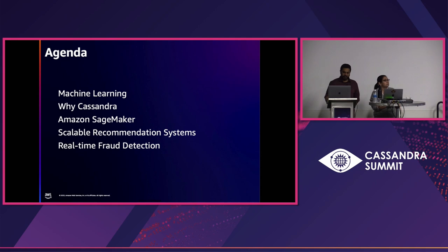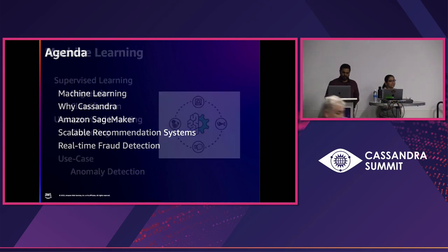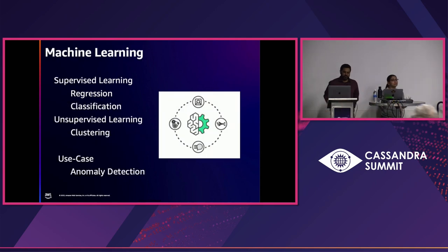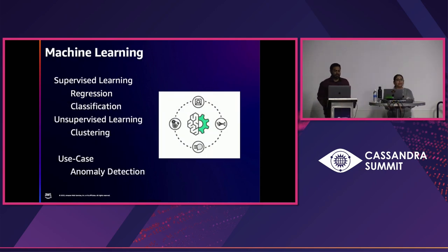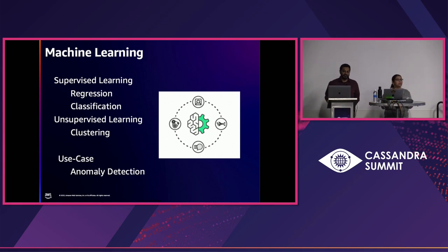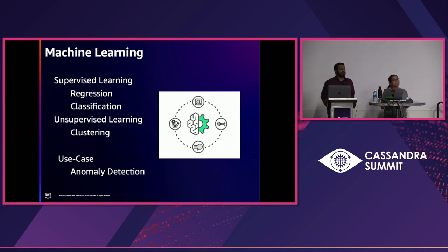So what's machine learning? As humans, some things come very naturally to us — you can look at certain data sets, make some observations, and make decisions. Teaching that to a machine is machine learning.